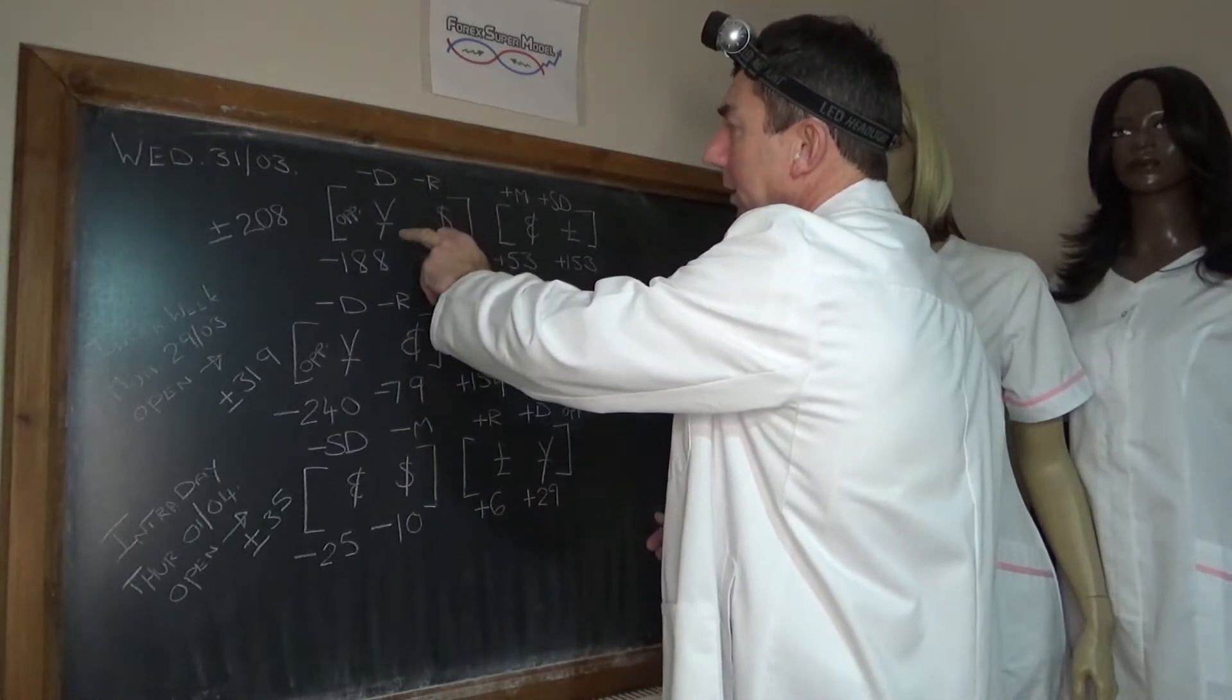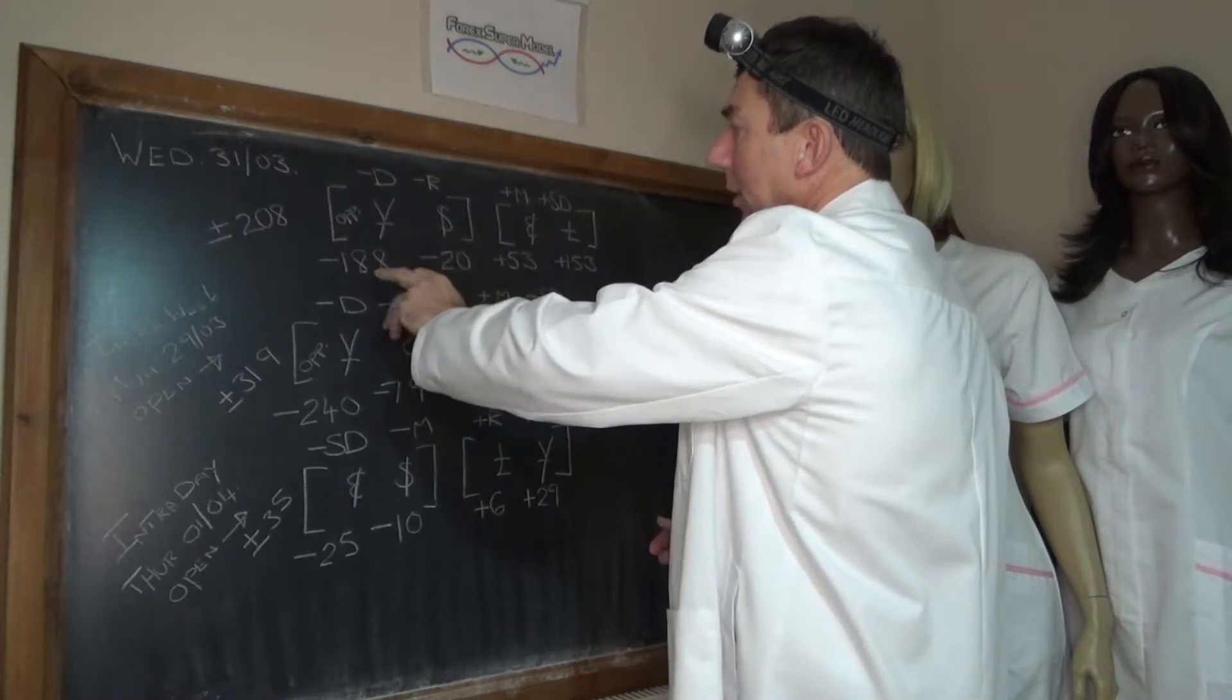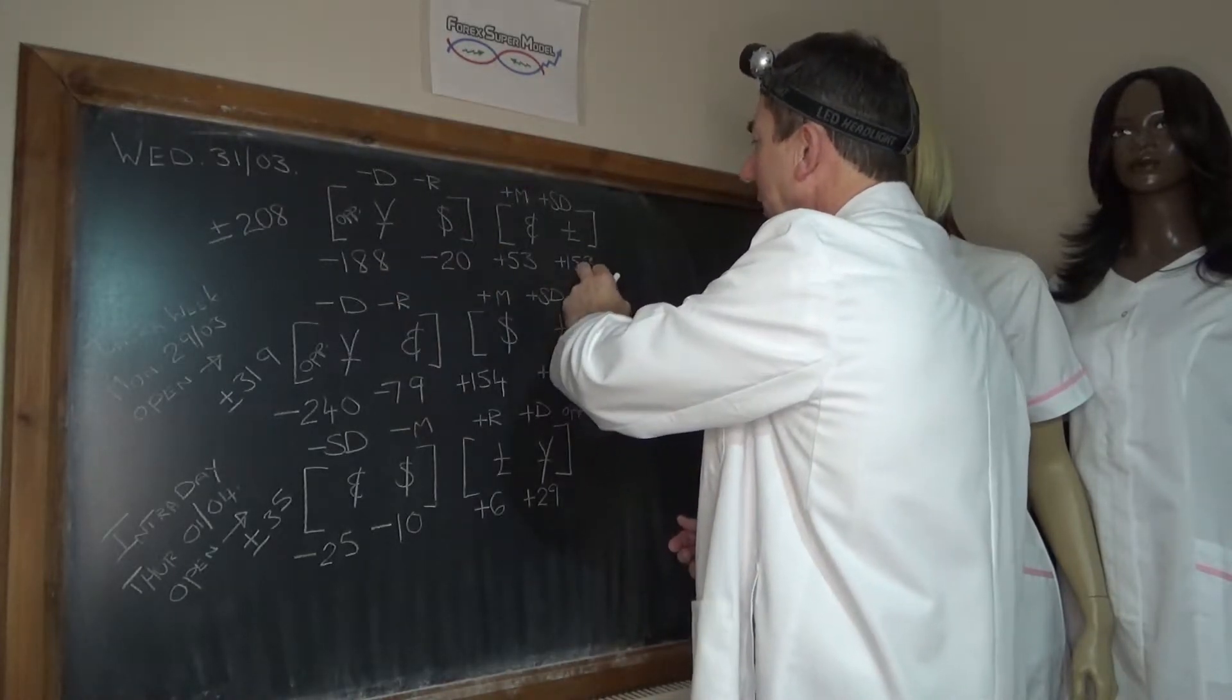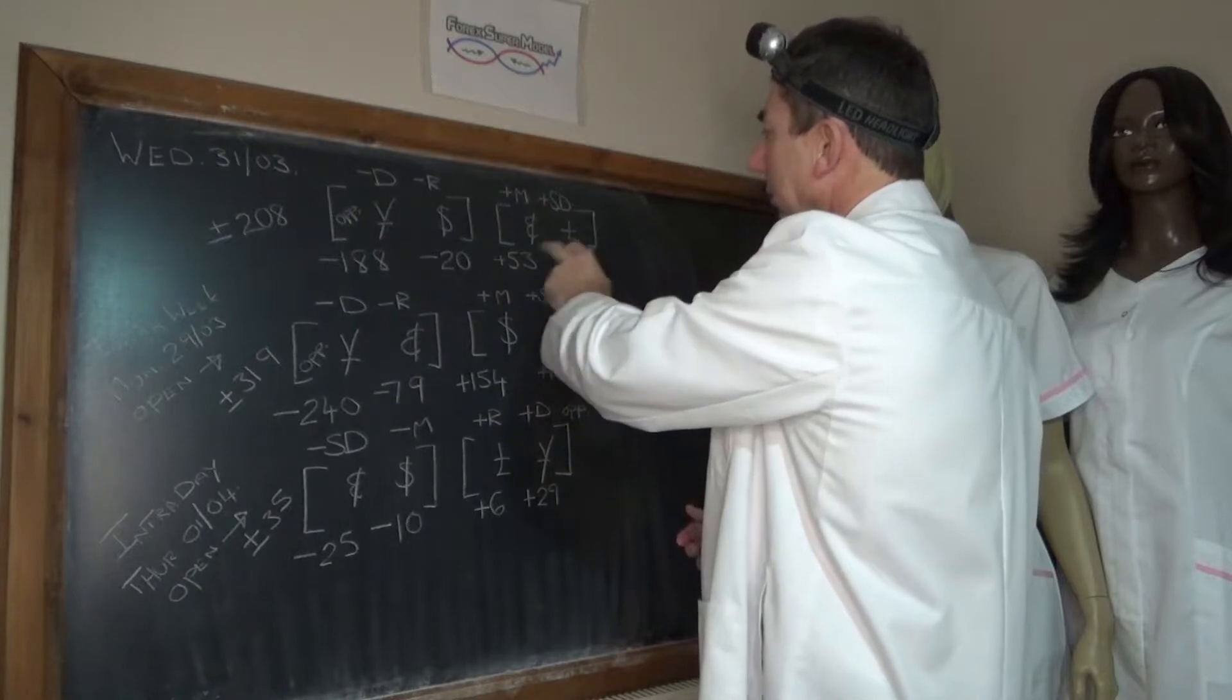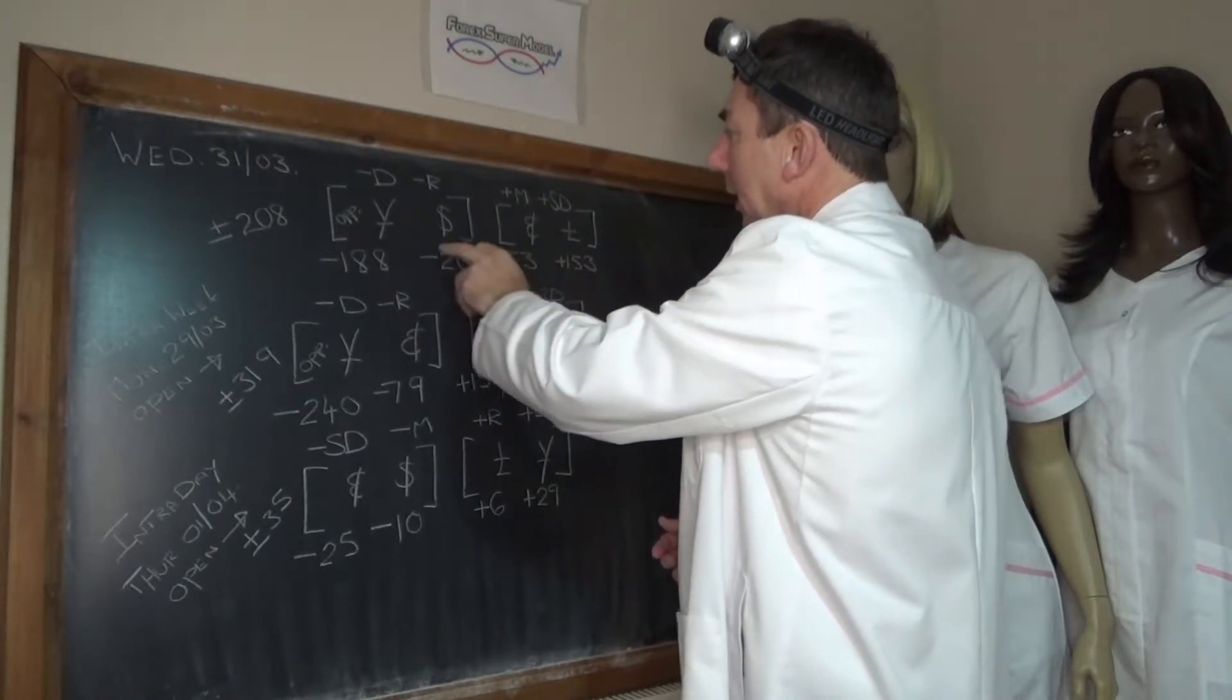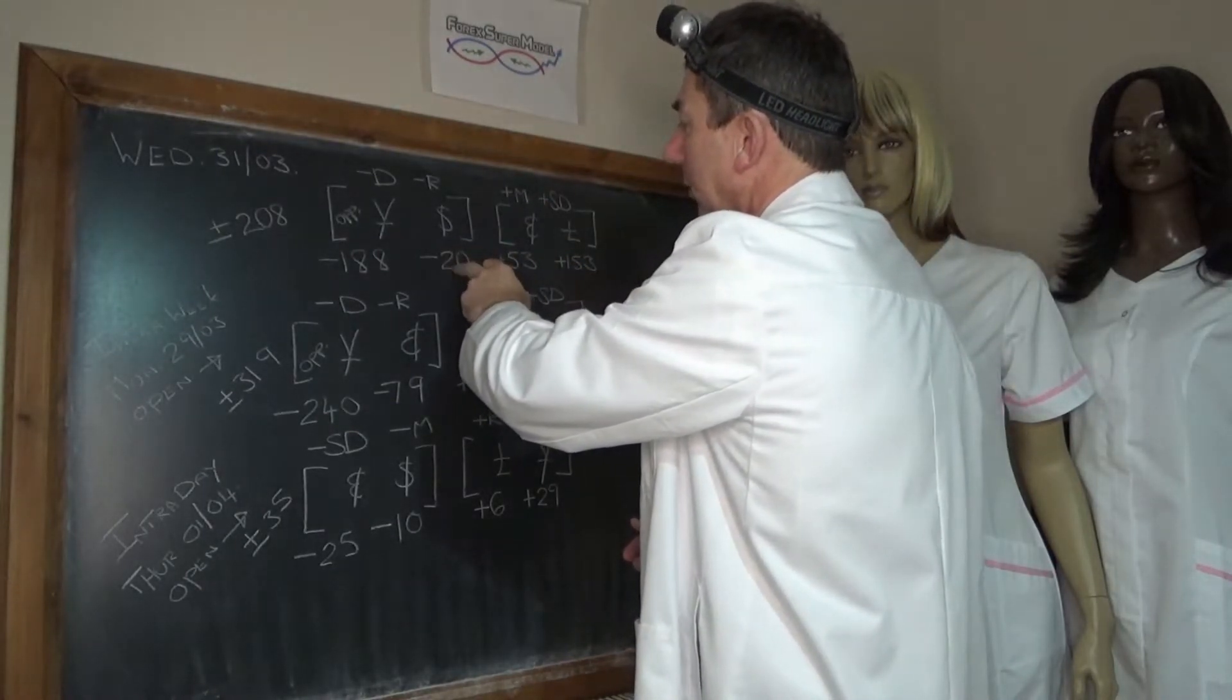Yesterday we had a negative opposed driver in the Yen at minus 188, front and back door flows going mainly into the pound at plus 153, next into the Euro at plus 53, and the dollar was the negative rock at minus 20, activity plus or minus 208.